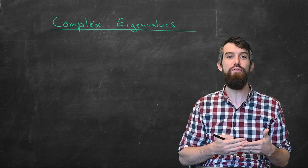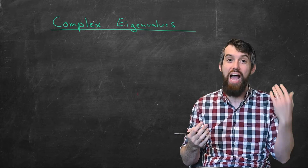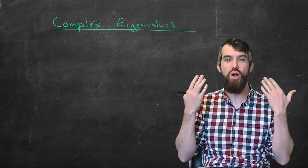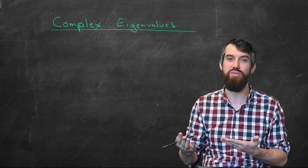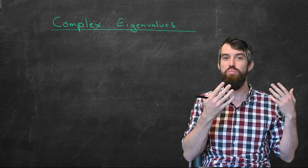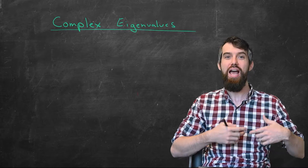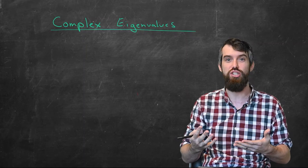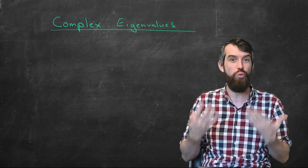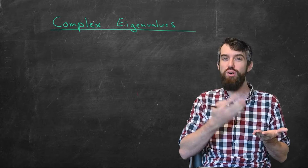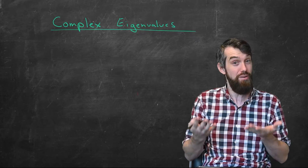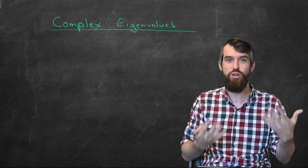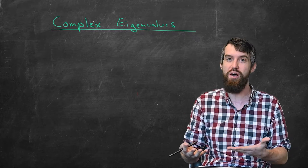In today's video, we're going to study how to find eigenvalues, how to find eigenvectors, and how to diagonalize a matrix if you have complex eigenvalues. We've seen before in previous videos, which I'll put down in the description, how to go through this process of eigenvalues, eigenvectors, and diagonalization when your eigenvalues are all real. But the process for complex eigenvalues is in many ways much the same, with just a little bit of algebraic trickery to deal with these complex values.